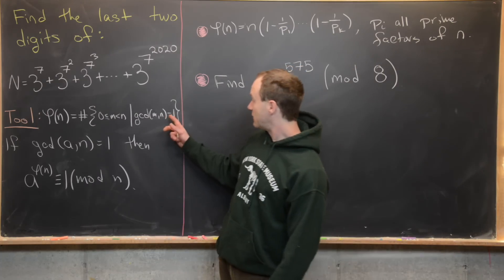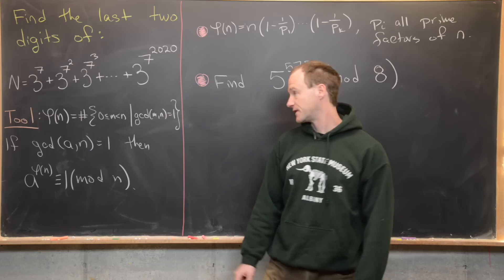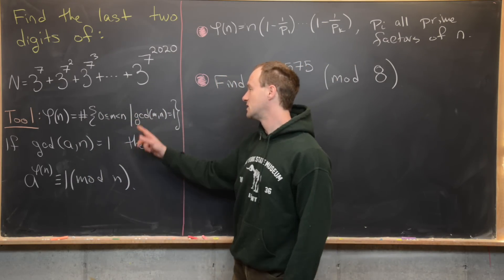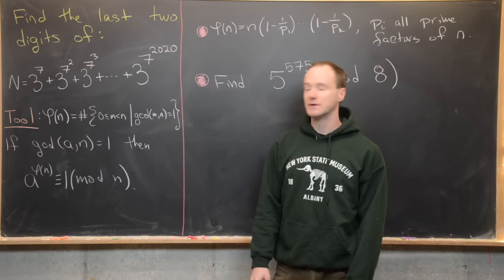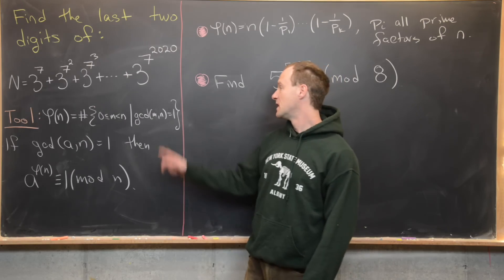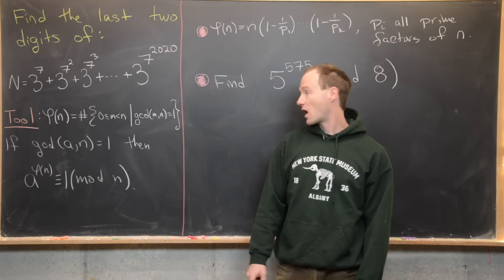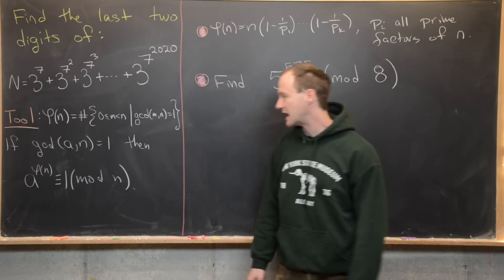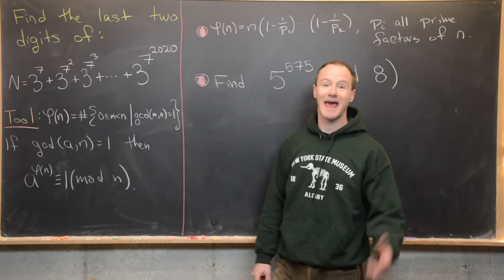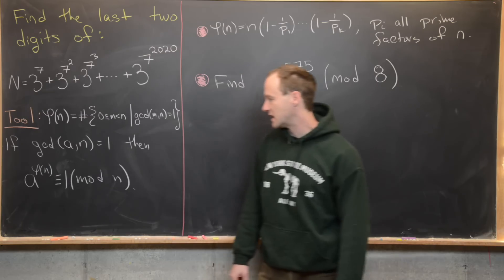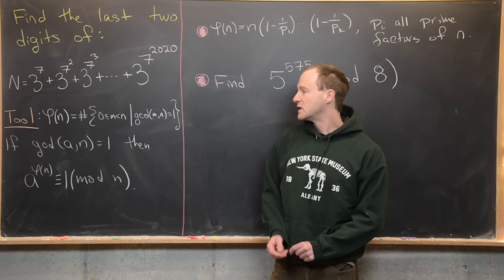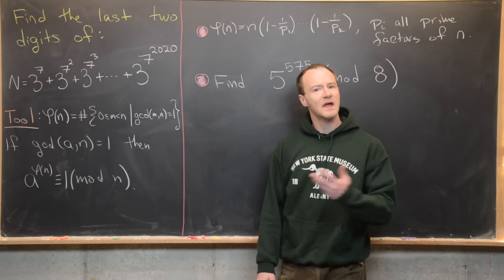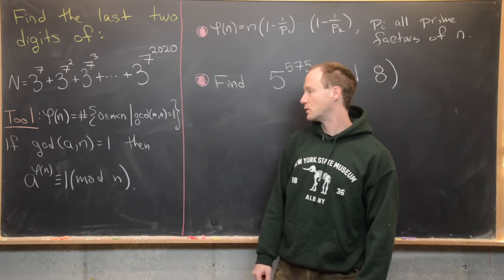Euler's generalization says that if you've got the Euler-Totient function phi of n, which is the size of the set of all numbers between 0 and n that are relatively prime with n, then if the GCD of a and n equals 1, then a to the phi of n is congruent to 1 mod n. I've proved it in my number theory playlist if you want to check that out.